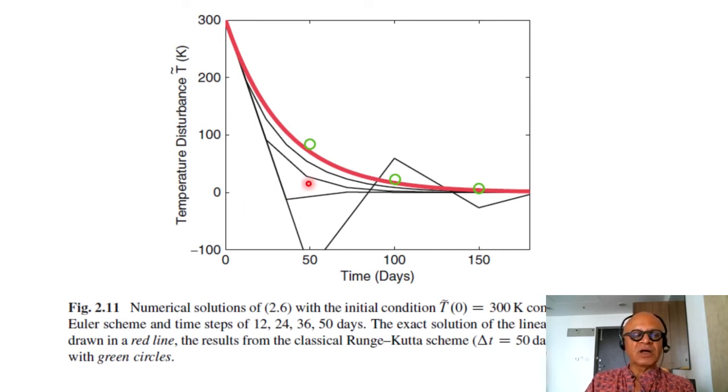So here Euler scheme and time steps of 12, 24, 36, and 50 days are used here. So you can see that when you use 50 days you got crazy solutions and the exact solution is shown in the red line and the result from the classical Runge-Kutta is labeled with the green circles.